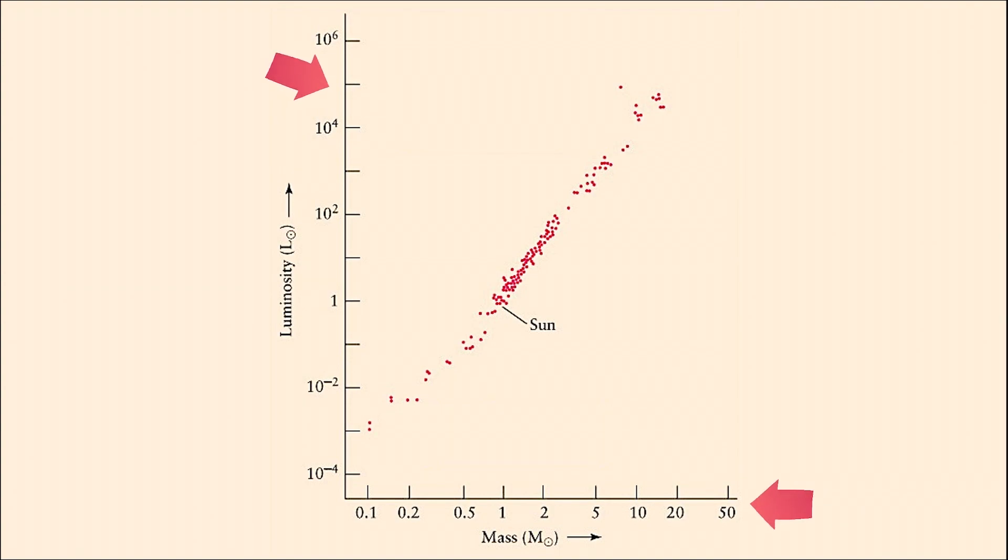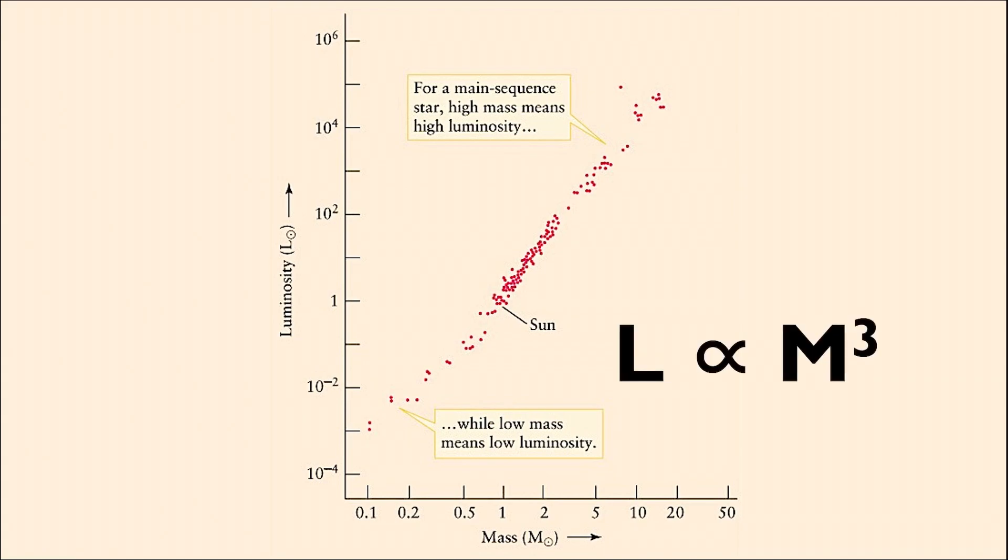Notice the scales of each axis increase rapidly, meaning that while this graph looks linear, it's actually not. For a main sequence star, high mass means high luminosity and low mass means low luminosity. The relationship between these parameters follows a cubic rule. For every increment of mass increase, the luminosity increases by a cube of that number.